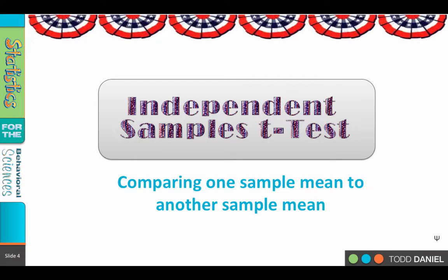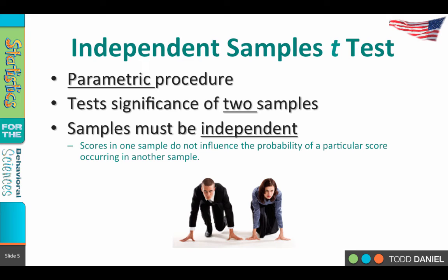The first t-test we are going to learn about is called the independent samples t-test. The independent samples t-test will allow us to compare the sample mean from one sample to the mean from a second sample. It is a parametric procedure, meaning both samples are drawn from populations. It tests whether two samples are statistically significantly different, with the assumption that the samples are independent.